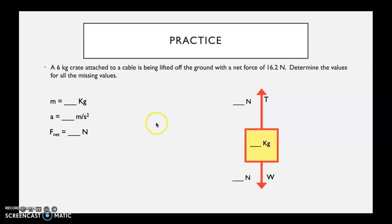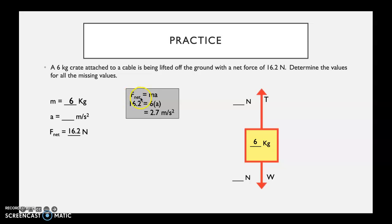I can fill in the mass as 6 kilograms and the net force as 16.2 newtons right away. The easiest next step is to find acceleration: acceleration equals net force divided by mass, so 16.2 divided by 6 gives 2.7 meters per second squared. I can set that information aside and move on to the other unknowns.